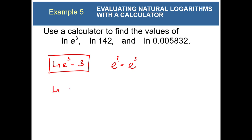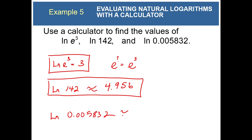For the other ones, we can just use a calculator. The natural log of 142 is approximately 4.956. And then the natural log of 0.005832 is approximately negative 5.144. And again, this one is negative, because the argument is less than 1.